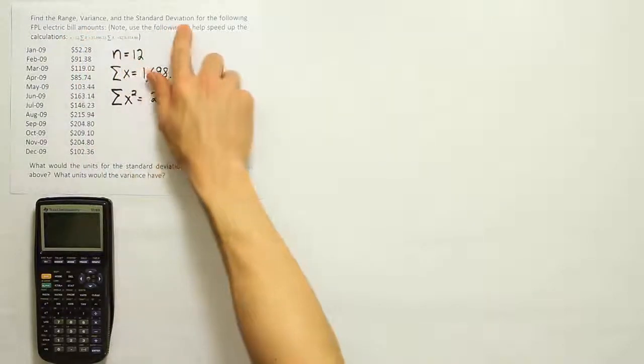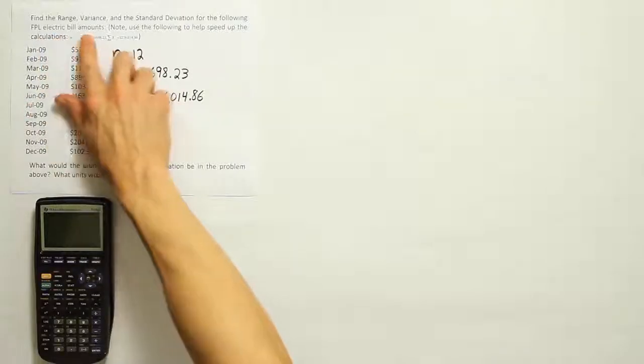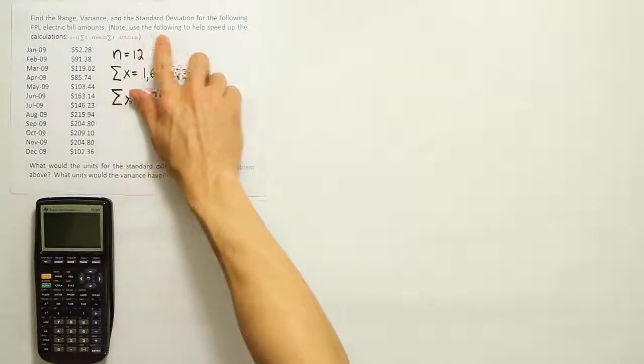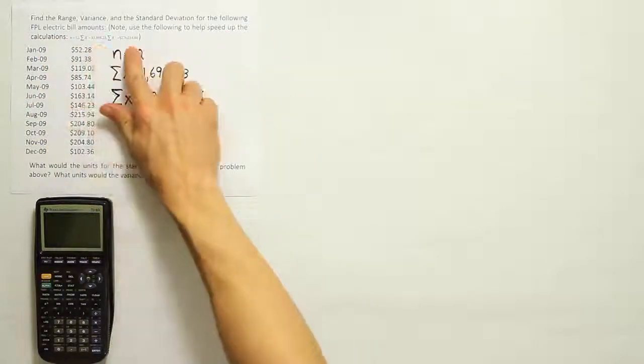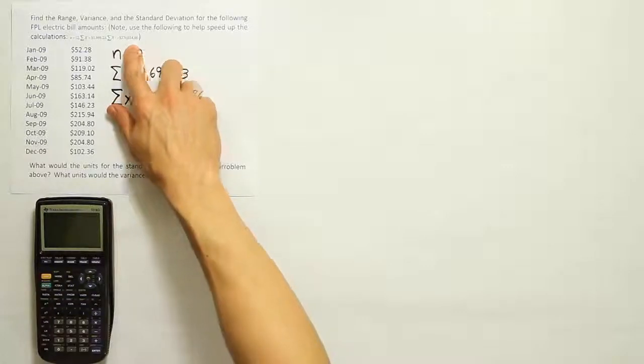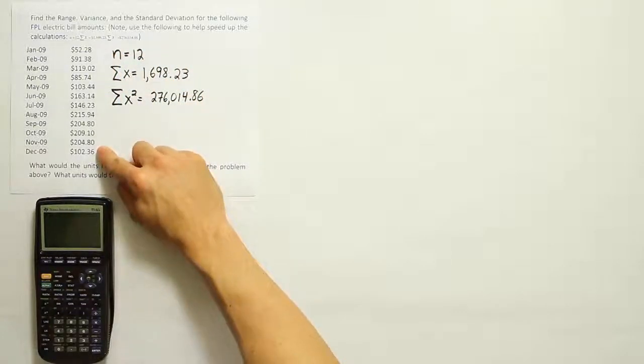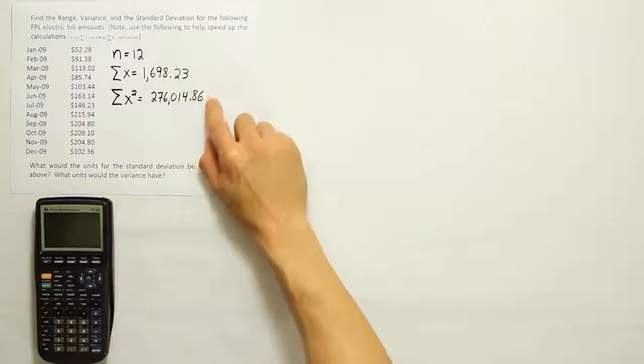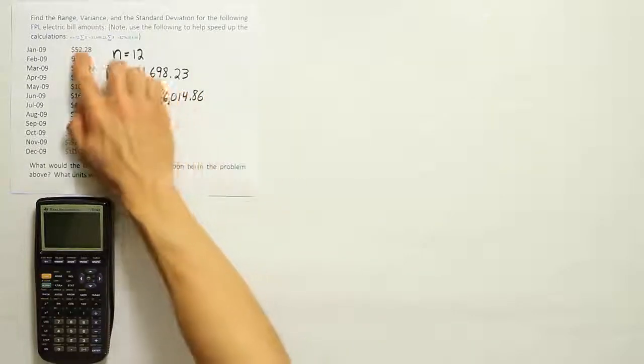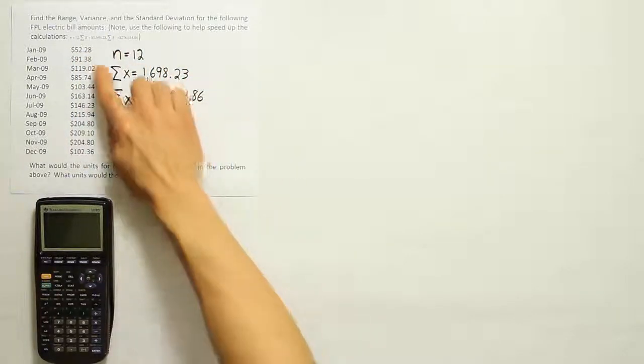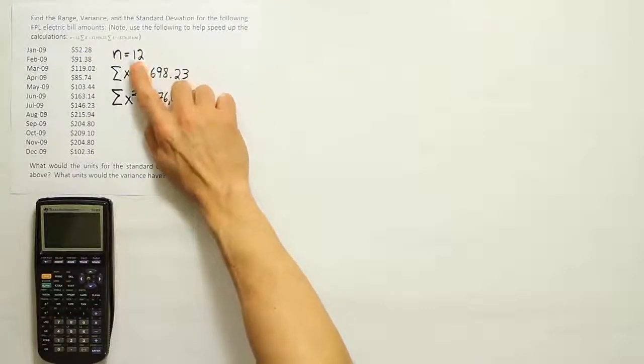Find the range, variance, and standard deviation for the following FPNL electric bill amounts. They've given us a little note here and they give us some summary calculations to use because the work here would be kind of tedious without them. I've relisted those here so you can see them better. You might not be able to see those on your screen at home. Let's recap how they got them real quick.